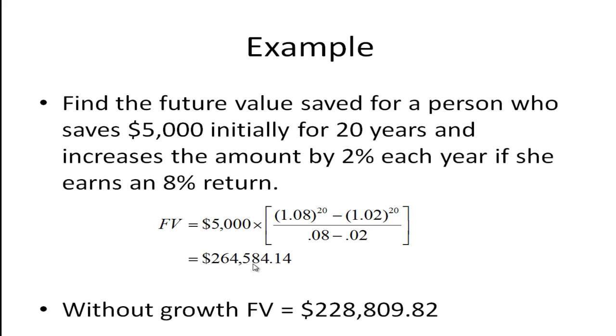I happen to work this out as just a regular annuity with no growth. If you didn't increase the amount you put in by two percent every year you'd only have $228,809.82. So by choosing to put in a little more every year after you get a pay raise you can increase the future value you have in your account by what looks to be a little less than $36,000. Pretty significant, and if you're lucky and you can increase it by more than two percent a year, maybe three percent a year, it would be even more significant.